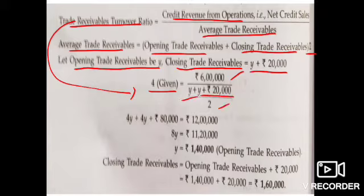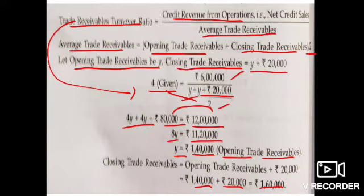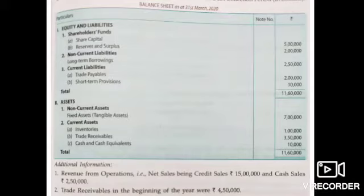Setting up the equation: 4 = ₹6,00,000 / [(2y + 20,000) / 2]. Cross-multiplying: 4(2y + 20,000) = 12,00,000, so 8y + 80,000 = 12,00,000, giving 8y = 11,20,000, therefore y = ₹1,40,000 (opening trade receivable). Closing trade receivable = ₹1,40,000 + ₹20,000 = ₹1,60,000.